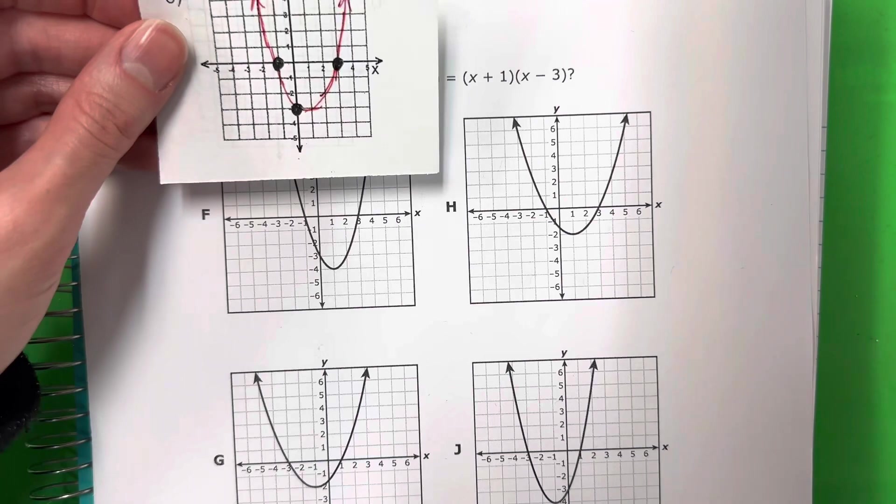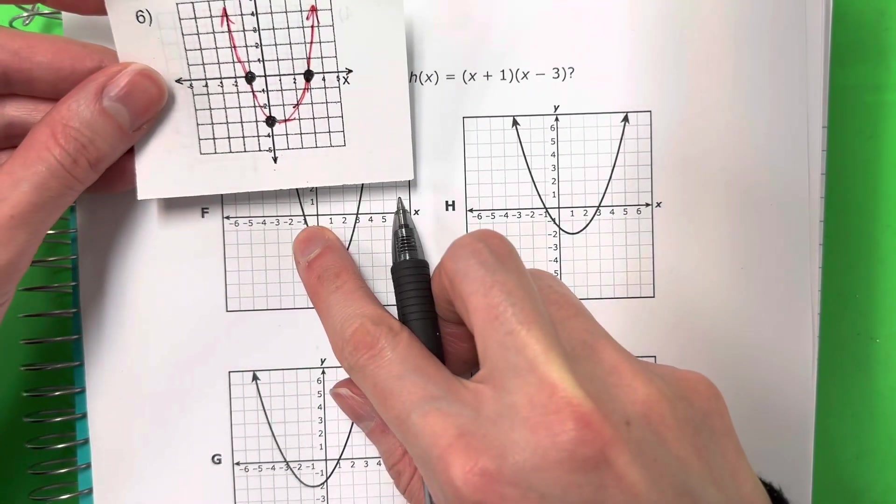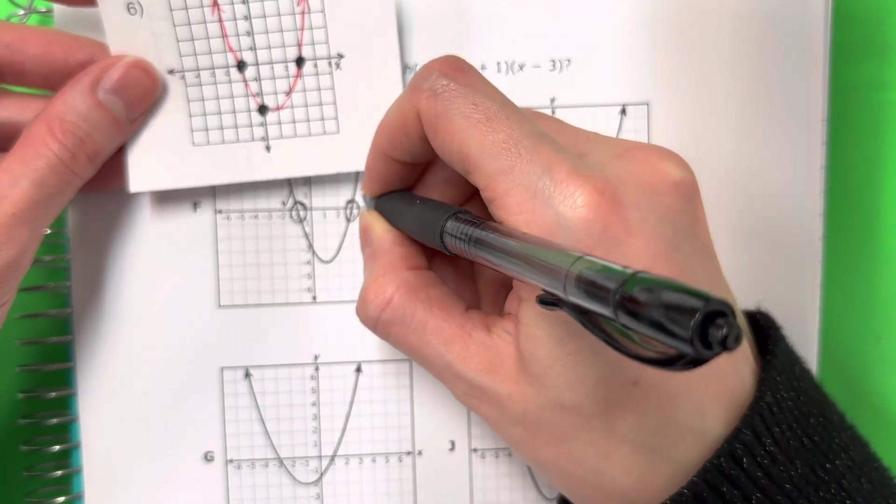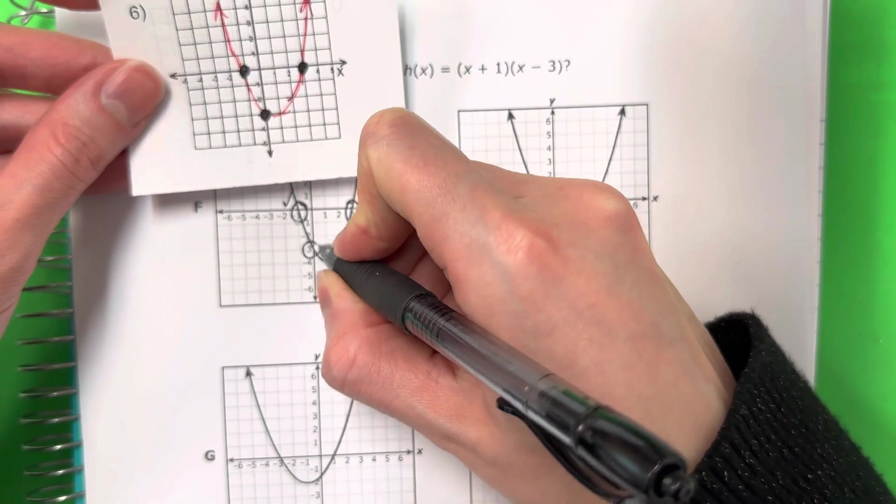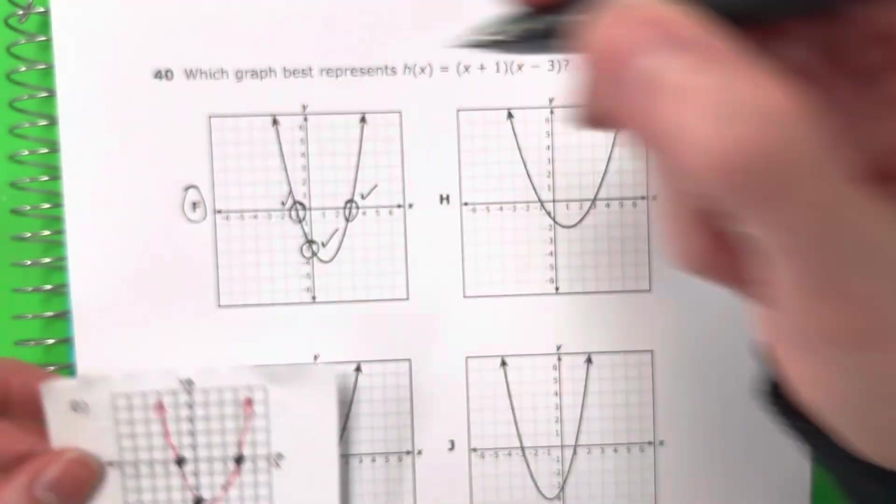So let's find which one has that, cual tiene esto. So it looks like here, this is good, negative 1. Here, 3, good, and down negative 3. So this looks like it's all good, todo bueno. So it looks like my answer is F, mi respuesta es F. Let's check this one real quick though.